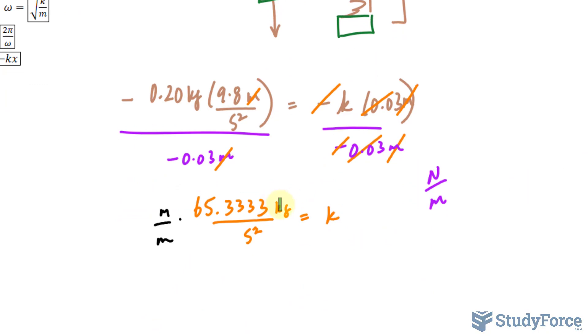Then we will get kilograms, meters, and seconds squared together, which makes a newton. And that meter at the bottom there makes it per meter. So it's 65.33333 newtons per meter moving forward.